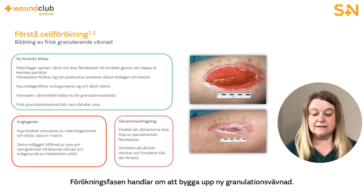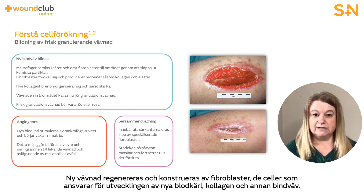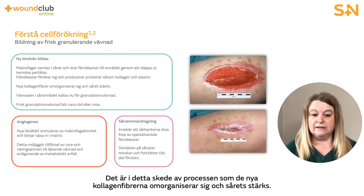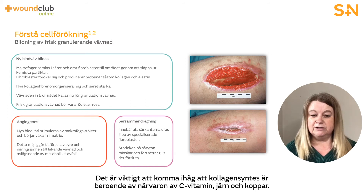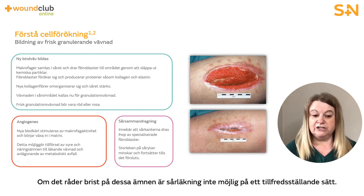The proliferative phase is about rebuilding new granulation tissue. New tissue is regenerated and constructed by fibroblasts — the cells responsible for the development of new blood vessels, collagen and other connective tissue. It is at this stage that new collagen fibres start to reorganise and the strength of the wound increases. The tissue is now referred to as granulation tissue and should be red to pink in appearance. It is important to remember that collagen synthesis is dependent on the presence of vitamin C, iron and copper. If there is a deficiency of these substances, satisfactory wound healing is not possible.